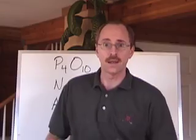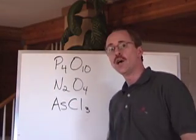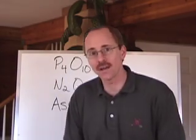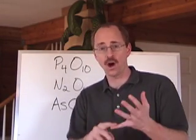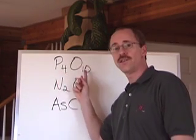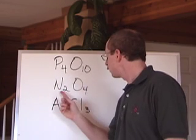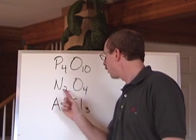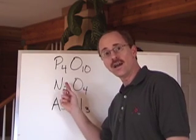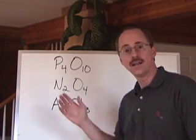Here we've got some compounds made up of strictly non-metals. They don't have charges, so they're not polyatomic ions. They have to be named either with a common name or using this prefix system. For example: tetra-phosphorus deca-oxide. How about two N's and four O's? Di-nitrogen tetra-oxide. And this one here: arsenic tri-chloride.